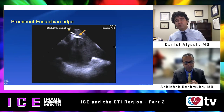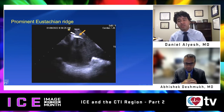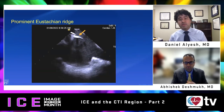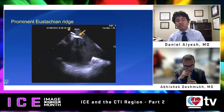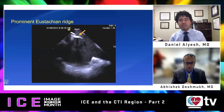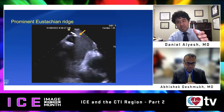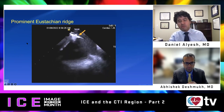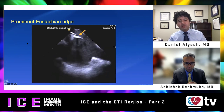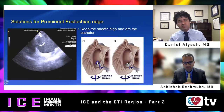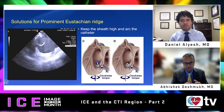We're going to switch gears and talk about the eustachian ridge, which can be very prominent and can impact your ability to manipulate the catheter and get good contact with the CTI region. We'll discuss a couple of troubleshooting methods for a prominent eustachian ridge, as you can see annotated in the image here. So first, identifying a prominent eustachian ridge.